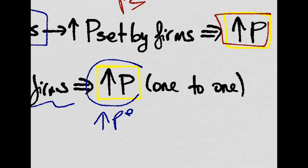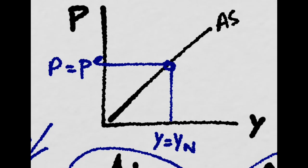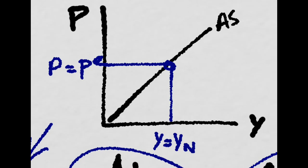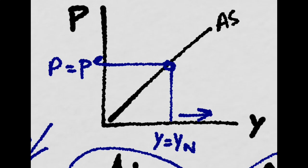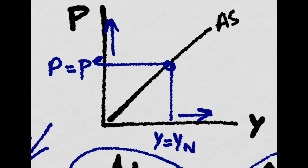One to one with the increase in expected price level. So the aggregate supply curve will look something like this. Remember, when output grows, then prices also grow. There is inflation.